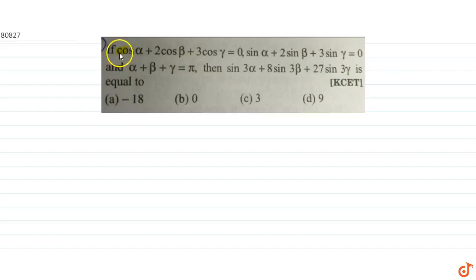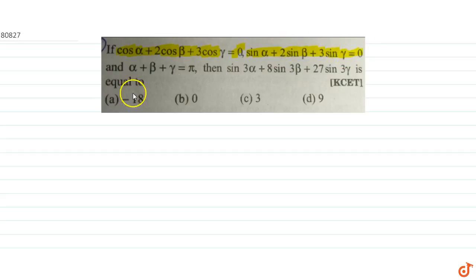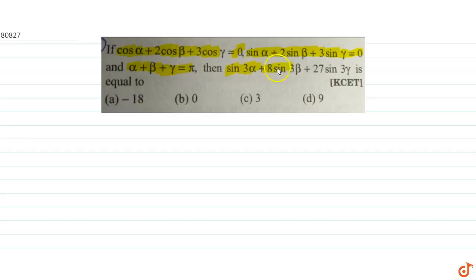In this question, we are given: cos alpha plus 2 cos beta plus 3 cos gamma equals 0, sin alpha plus 2 sin beta plus 3 sin gamma equals 0, and alpha plus beta plus gamma equals pi. We have to find the value of sin 3 alpha plus 8 sin 3 beta plus 27 sin 3 gamma.